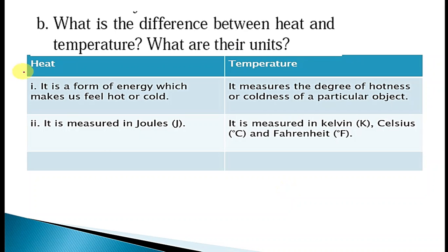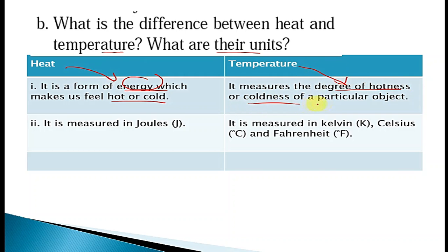Question 3B: What is the difference between heat and temperature, and what are their units? Heat is a form of energy — like kinetic or potential energy — which makes us feel hot or cold. Temperature measures the degree of hotness or coldness of a particular object. The unit of heat is Joules, while temperature is measured in Kelvin, degrees Celsius, or Fahrenheit.